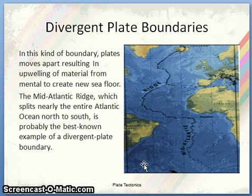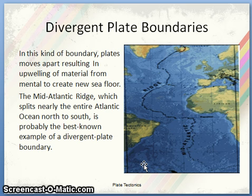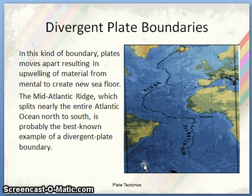The Mid-Atlantic Ridge is an example of a divergent plate boundary. In this kind of boundary, plates move apart, resulting in upwelling of material from the mantle to create new seafloor — hence new crust is being formed. The Mid-Atlantic Ridge, which splits nearly the entire Atlantic Ocean north to south, is probably the best known example.